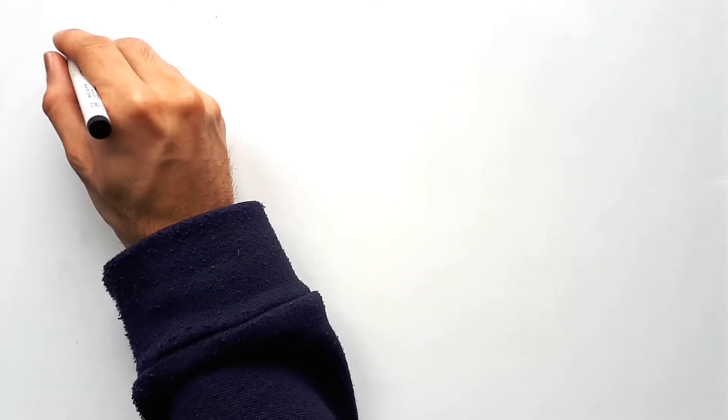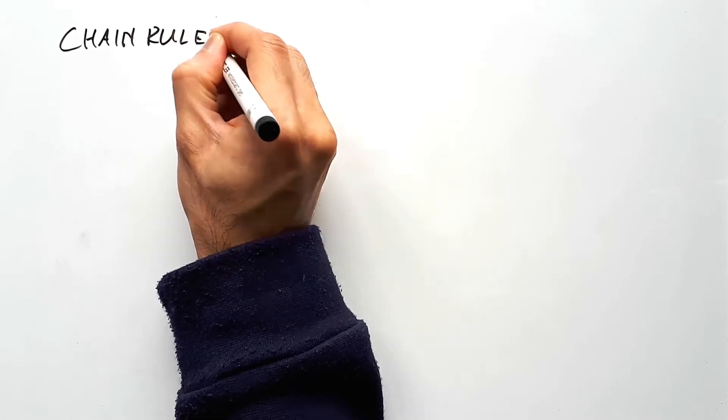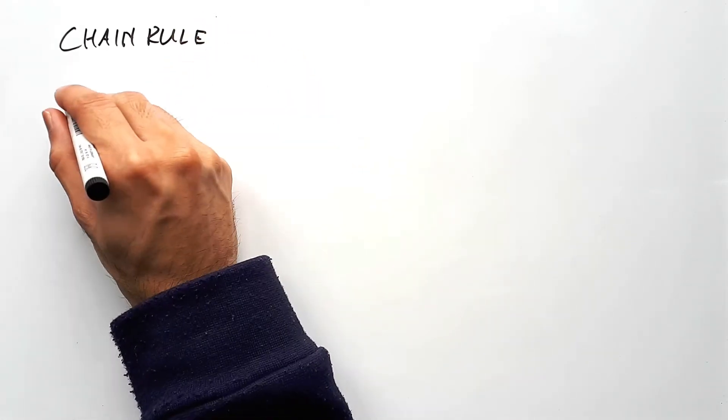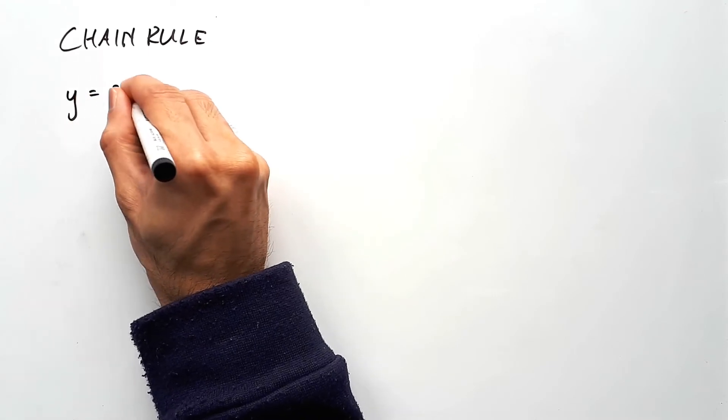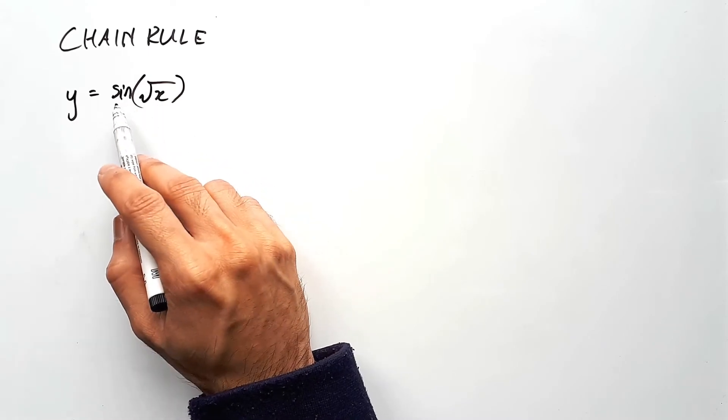The chain rule is a special type of differentiation that you would do when you have a composite function, or in other words, when you have a function inside another function. So for example, if y equals the sine of square root of x, there is a square root function inside the sine function.